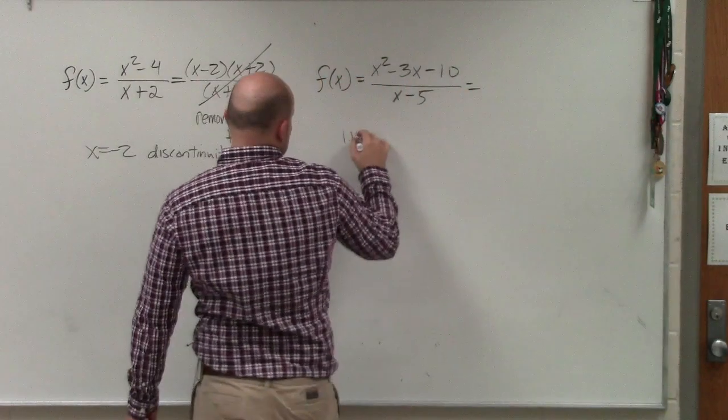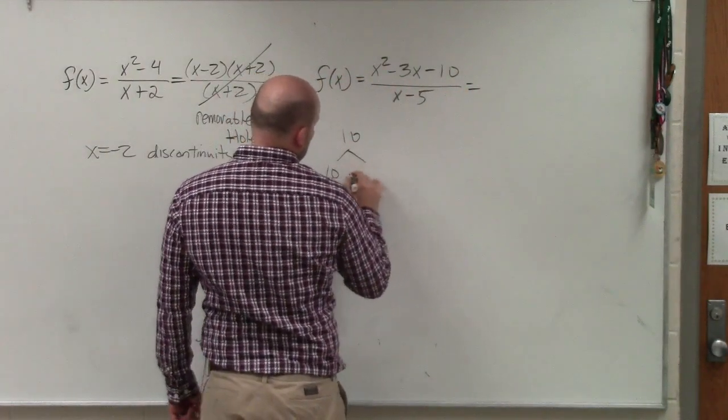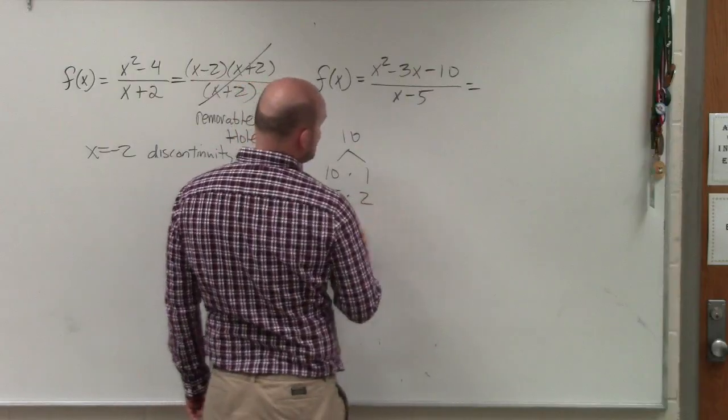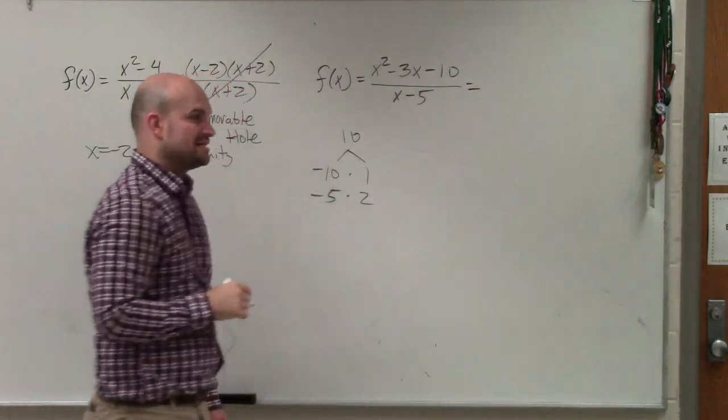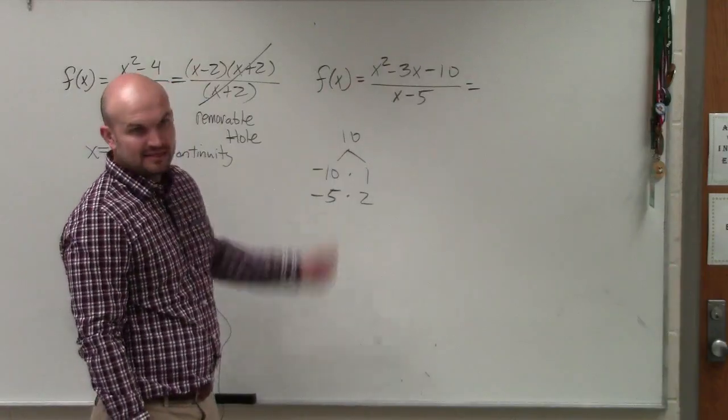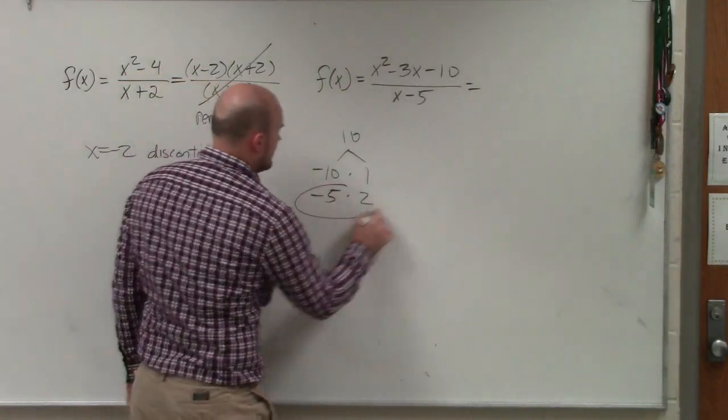And again, if you're having trouble, I just think of the numbers that multiply to give me 10: 10 times 1, 5 times 2. Since they have to add to give me something negative, the larger factor has to be negative. And which one of these add to give me negative 3? 5 and negative 2.